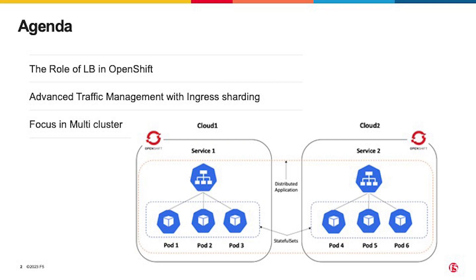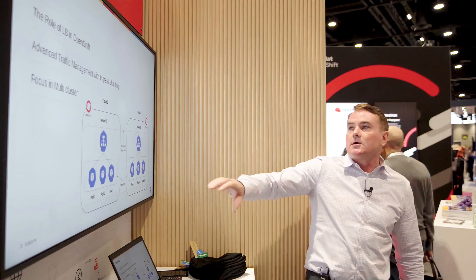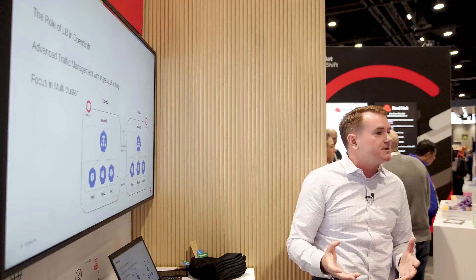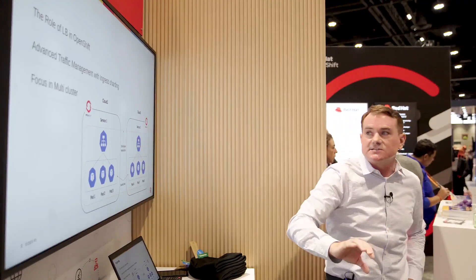The agenda covers three main items: first, the role of a load balancer within OpenShift; second, traffic management and something called ingress sharding — a term pulled directly from Red Hat docs. Ingress sharding is very similar to route sharding and relates to what we're doing specifically with HAProxy and sharding of ingresses across different clusters.